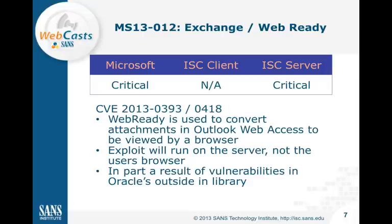MS-1312 is a vulnerability in Exchange, but it's really a vulnerability in the Oracle Outside In libraries. These libraries were patched with the last Oracle critical patch update, but software like Exchange now has to apply this patch as well. These libraries are used to convert a large number of different document formats into a web-displayable form. This would exploit the server, not the user viewing the document — someone sends an exploit document, the user views it via Outlook Web Access, and the Exchange server gets exploited.